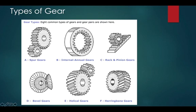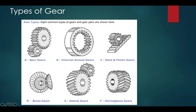There are several types of gears. Spur gear has teeth cut parallel to the axis of the shaft. Internal gear has teeth cut on the inside of the gear. Rack and pinion is used when the axes of both gears do not intersect. Bevel gear is used when the axes of both gears are perpendicular and meet each other. Helical gear has teeth cut at an angle to the axis. Herringbone gear is a double helical gear.